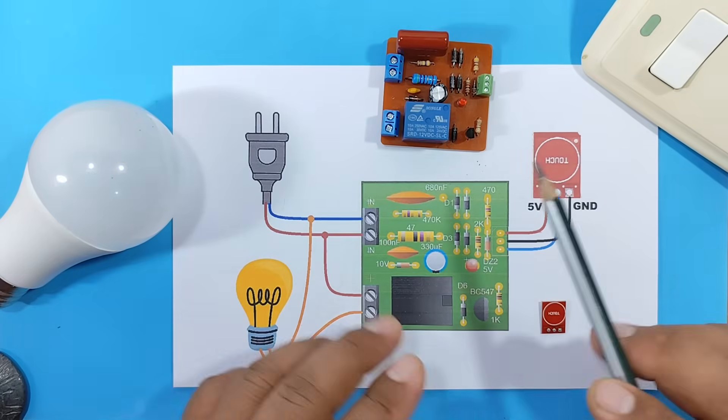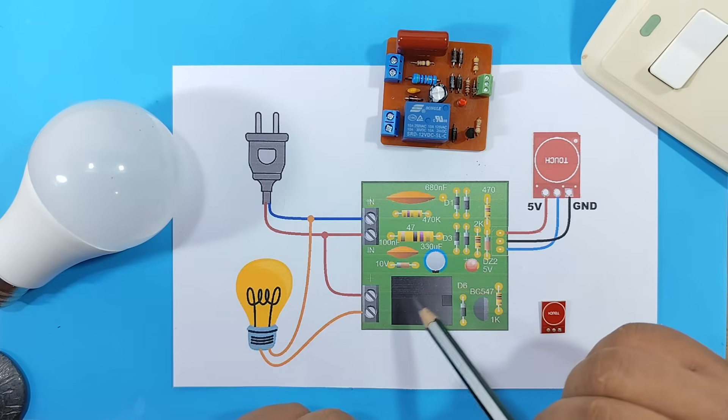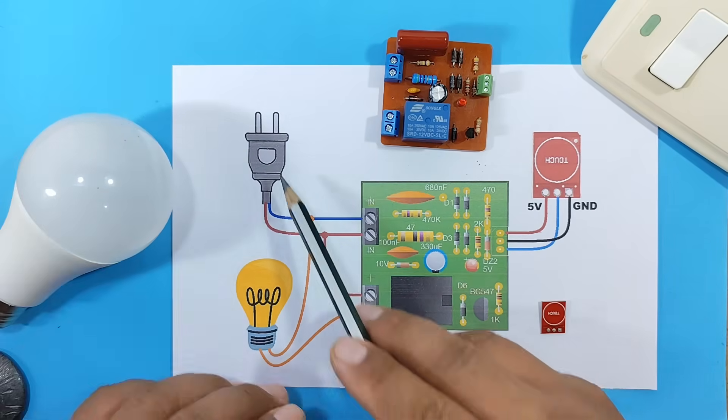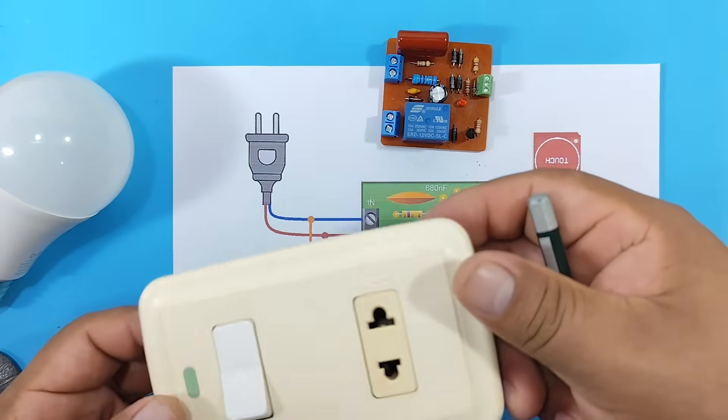Very good. Now let's look at the connections on the electronic board. Here, as we can see, we have a light bulb and a power outlet, which would be this one here.